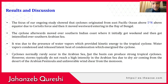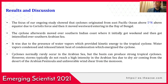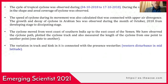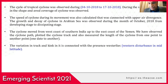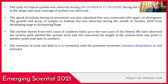Cyclones normally rarely occur in the Arabian Sea, but the basin can produce strong tropical cyclones. However, storms typically do not reach high intensity in the Arabian Sea due to dry air from the deserts of the Arabian Peninsula and unfavorable wind shear from the monsoon. The lifecycle of this tropical cyclone was observed during the period 4th October 2018 to 17th October 2018. The change in shape and aerial coverage of the cyclone was observed, and the speed of the cyclone during its movement was calculated, connected with upper air divergence.